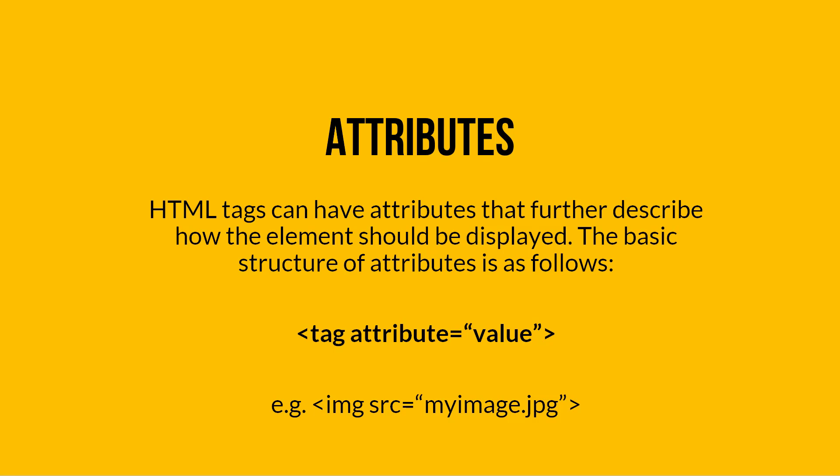If we look at our image tag, this is a good example. You can see we have IMG, which is the name of our tag for image. Then we have SRC, which stands for source, then equals, and then myimage.jpg. This tells the browser for this image tag where to find the image, which is at myimage.jpg. This is what's called a relative path — the browser will look at whatever URL you happen to be at. So if you're at google.com/about and you put this image tag in, the browser would look at google.com/about/myimage.jpg for that image file.